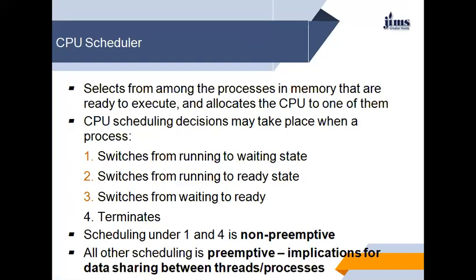For conditions 1 and 4, there is no choice — a new process must be selected. For conditions 2 and 3, there is a choice to either continue running the current process or select a different one. If scheduling takes place only under conditions 1 and 4, the system is said to be non-preemptive or cooperative — once a process starts running, it keeps running until it voluntarily blocks or finishes. Otherwise, the system is said to be preemptive.